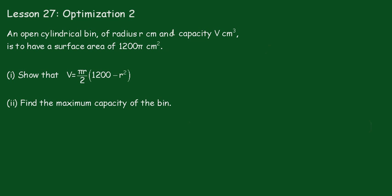Now in part two, we have to find the maximum capacity of the bin. So we'll have to differentiate this function, but I'll remove the brackets, which will make it a little bit easier to differentiate. I'll leave that π upon 2 at the front. So we'll write this as V equals π upon 2 and we'll take the r inside.